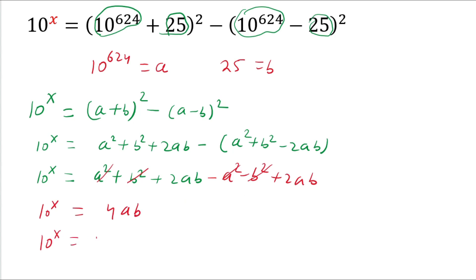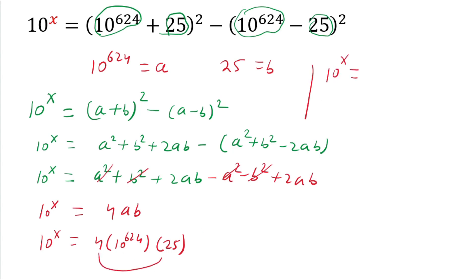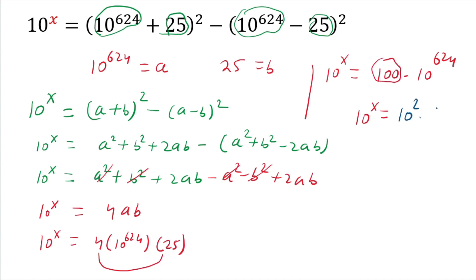So 10 power x equals 4 times the value of a. The value of a is 10 power 624, and the value of b is 25. So 10 power x equals 4 multiplied by 25, giving 100 times 10 power 624. This 100 is the same as 10 power 2 times 10 power 624. We will apply the base and exponent rule: a^m times a^n equals a^(m+n).